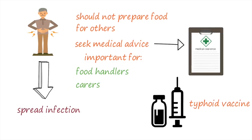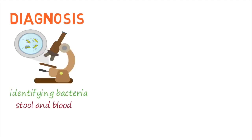Salmonella infections are usually diagnosed by identifying the bacteria in stool samples or blood. Other types of blood tests, like those that check for antibodies, are sometimes used but are not as reliable. In some instances, Salmonella can be isolated from sites like the brain or urine if these sites have been infected.